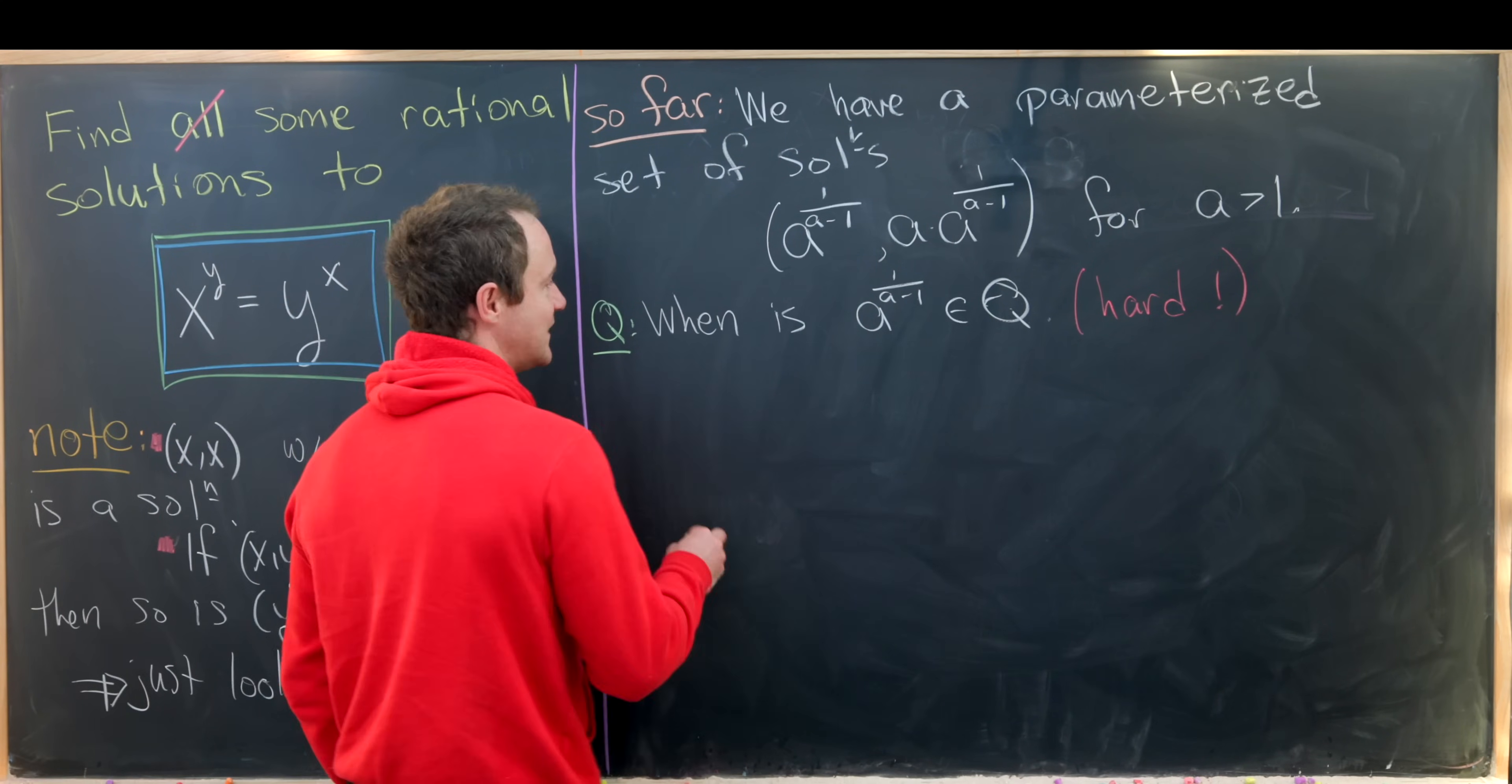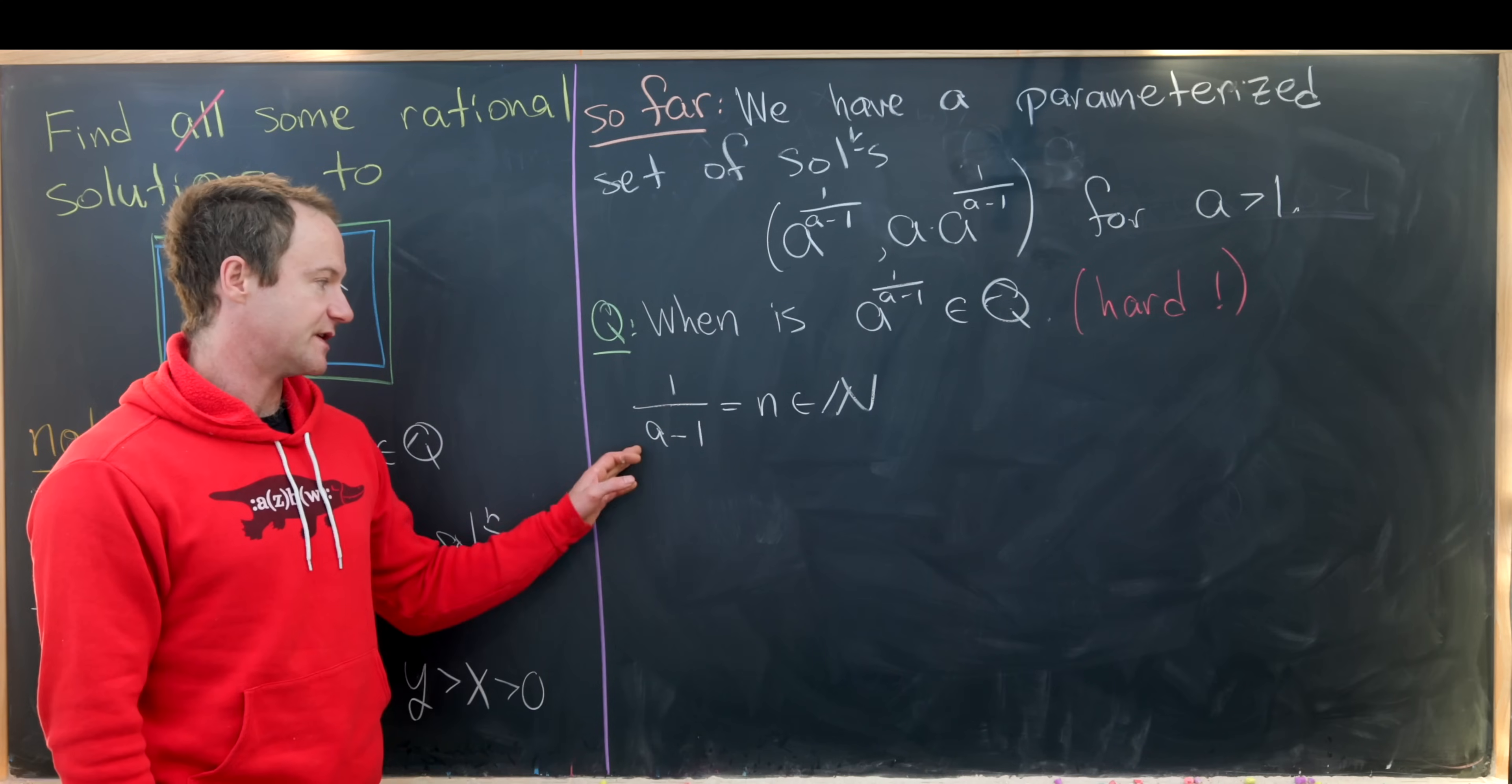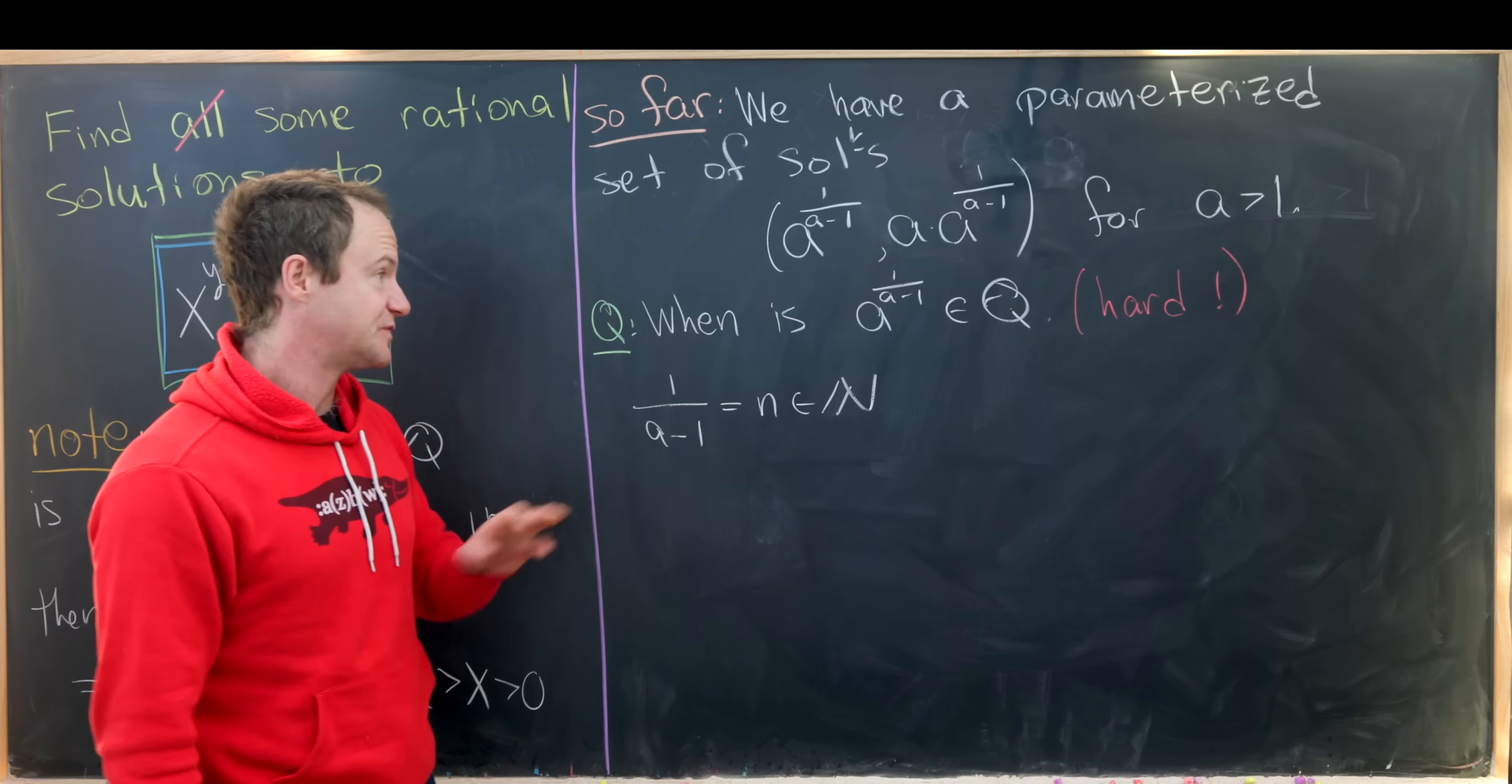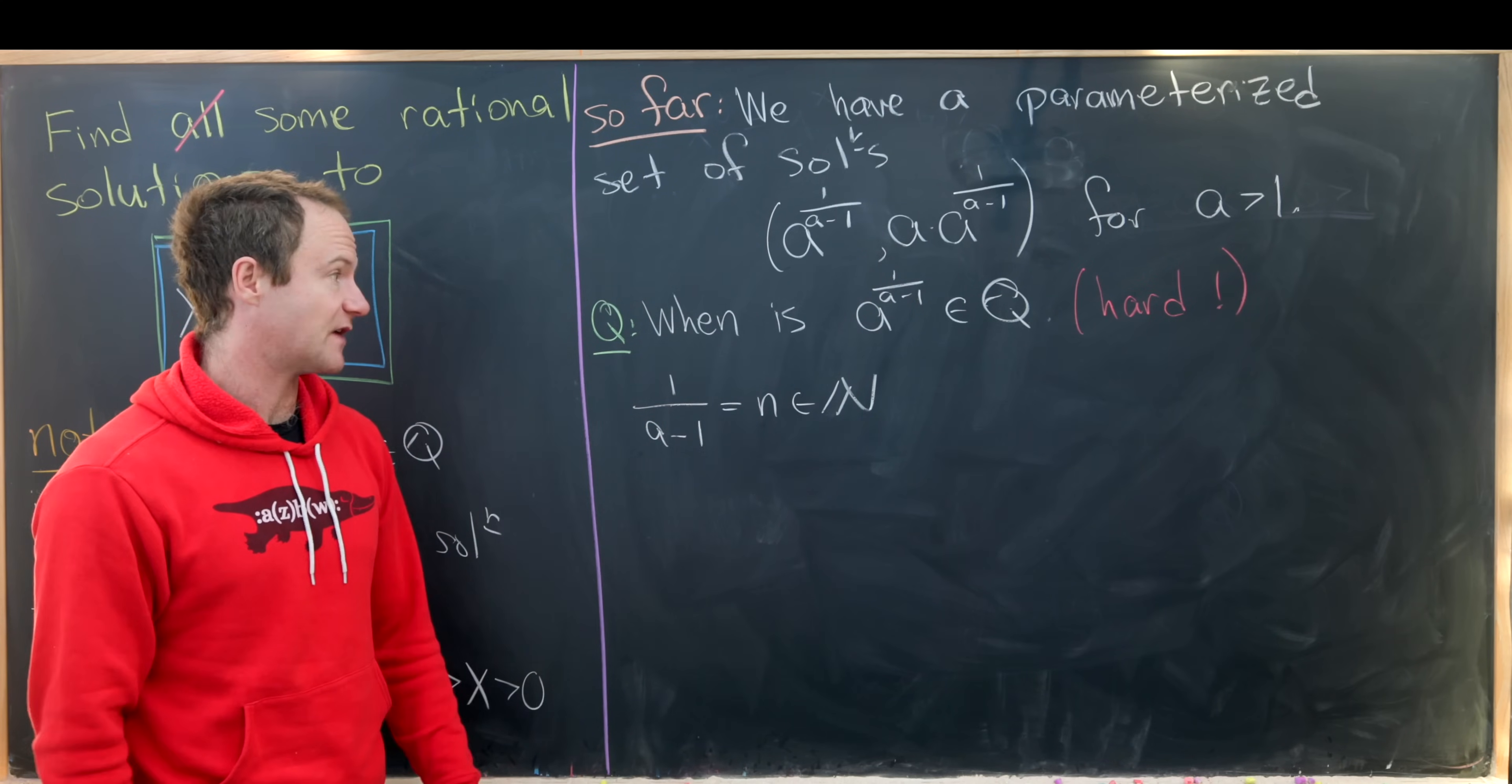So let's find the obvious places where this is a rational number. So this is obviously going to be a rational number when one over a minus one is a natural number. I'll just call it n. Well, notice if one over a minus one is a natural number, then a is clearly a rational number, which means we have a to the n, which is also a rational number.